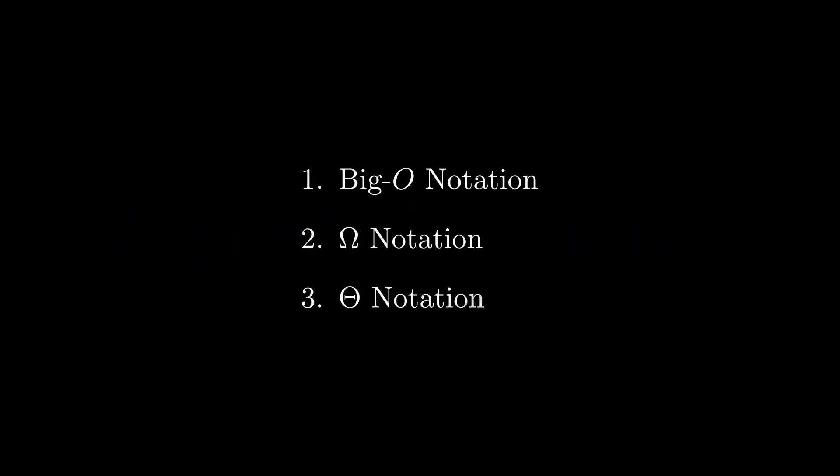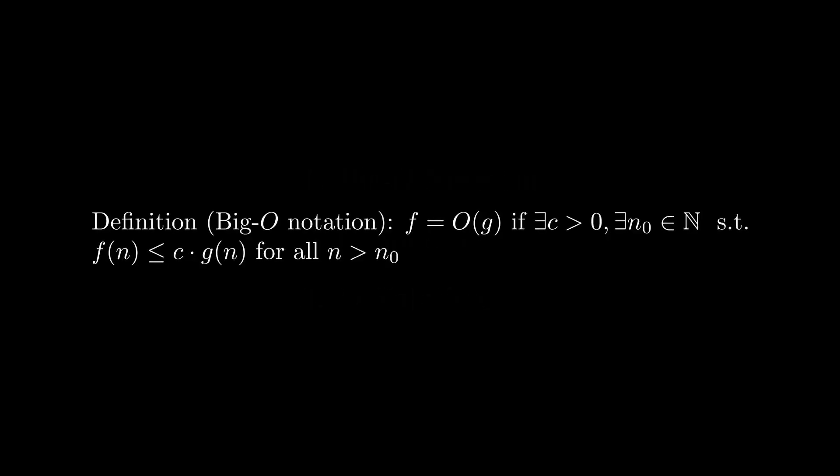Asymptotic notation is a mathematical formalism used to bound the growth of a given function. There are three main types of notation employed to describe asymptotic behavior: Big O, Omega, and Theta. Big O is used to indicate if a given function is bounded above by a positive constant multiple of another function, as the argument tends to infinity.